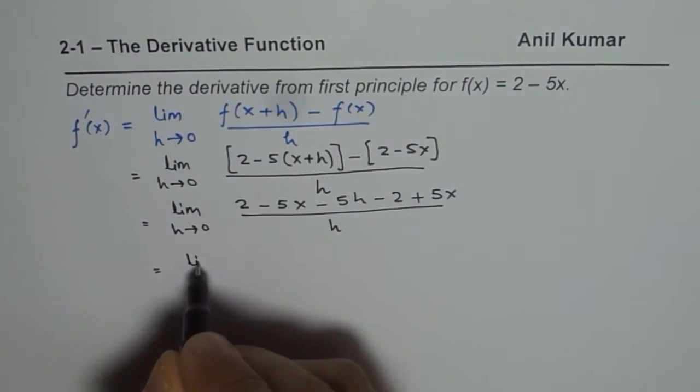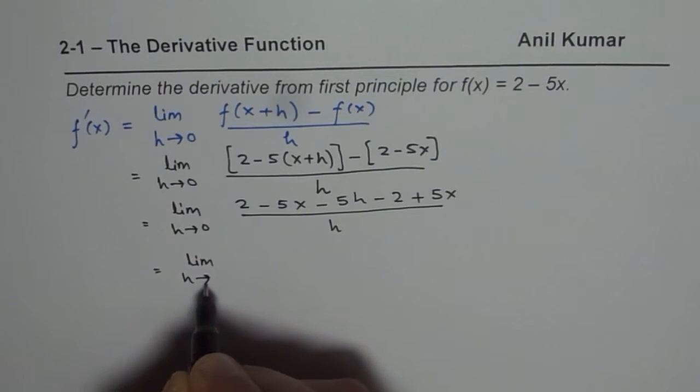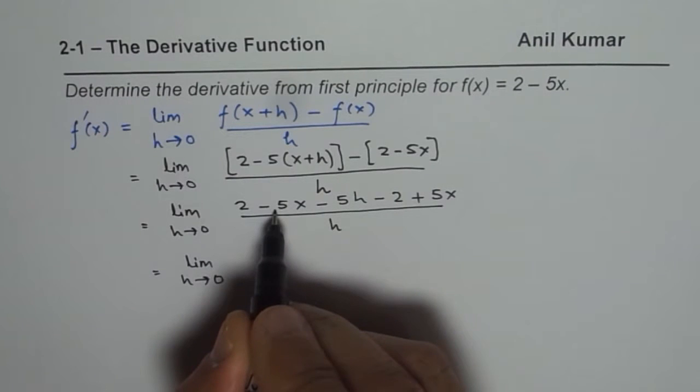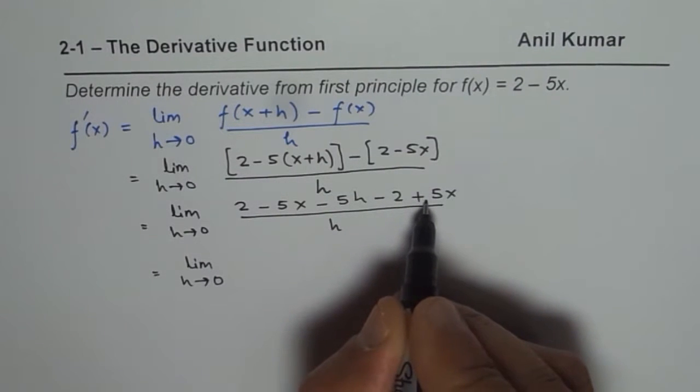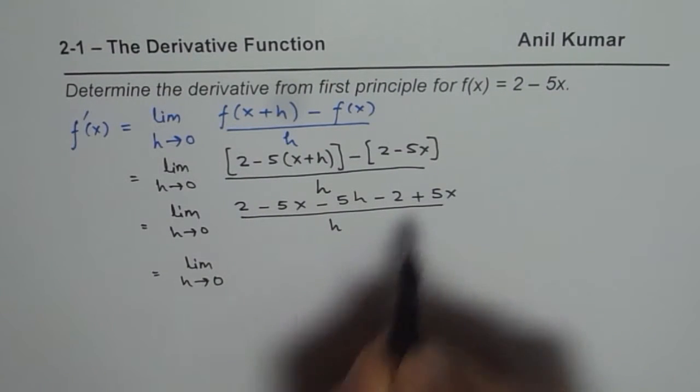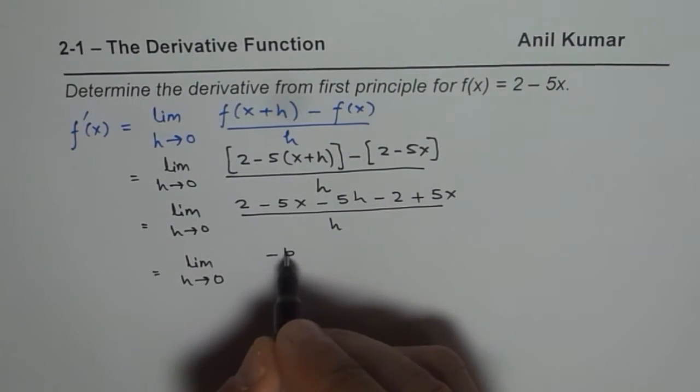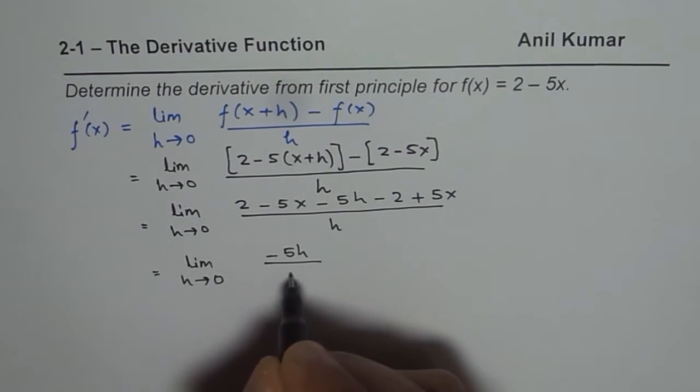This could be written as limit h approaches 0. 2 minus 2 is 0. Minus 5x plus 5x is also 0. So we are left with minus 5h in the numerator. So we have minus 5h over h.